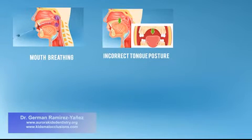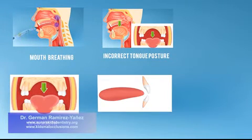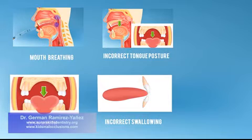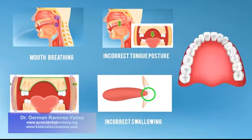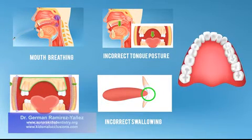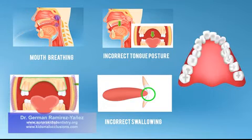All those dysfunctions — mouth breathing, incorrect tongue posture, open mouth, and incorrect swallowing — are going to continue affecting the growth and development of your upper and lower jaws. And as a consequence, there is less room for your teeth, and they become crooked.